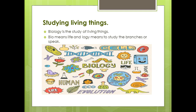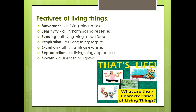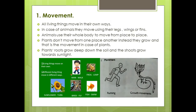All living things share certain features, and if these features are present in a living thing, it falls into the category of living things. All living things move, have senses, need food, respire, excrete, reproduce, and they grow. This is how we can distinguish between a living thing and a non-living thing by detecting these features.